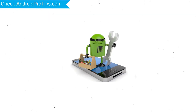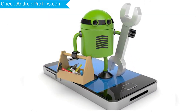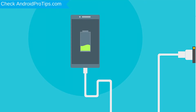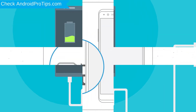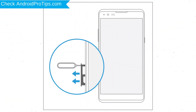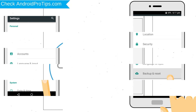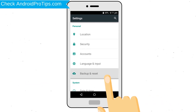Before resetting your mobile, your battery must be above 50%. Remove SD cards and SIMs, and back up your Android mobile data if possible.